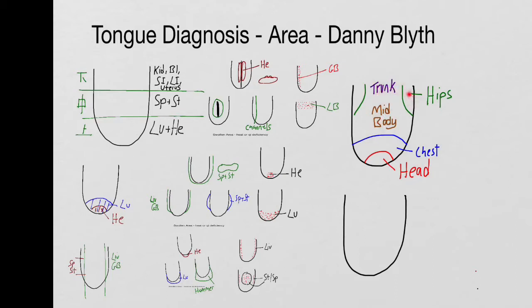With spots and points in external pathogenic factors, if they're on the front of the tongue, it shows you that the pathogen's in the exterior, and if it's in the centre of the tongue, the spleen and stomach area, it shows you that it's on the interior. Likewise, you can see a progression from the outside of the tongue in exterior conditions into the centre of the tongue in interior ones.